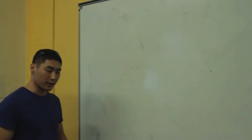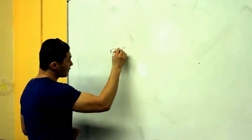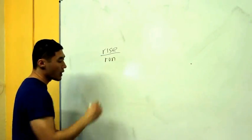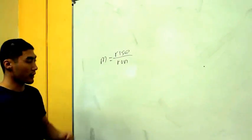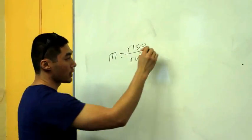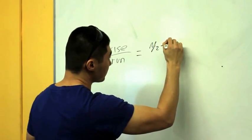We remember in our third grade class, slope is rise over run. I will use the variable m to represent rise over run. To break it down any further, rise over run is nothing more than y2 minus y1.